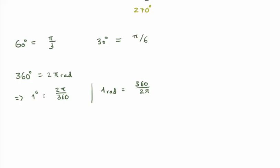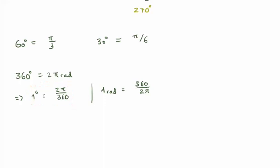To convert between degrees and radians: since there are 360 degrees in two pi radians, one degree corresponds to two pi over 360, and one radian corresponds to 360 divided by two pi.